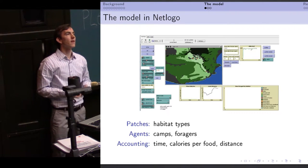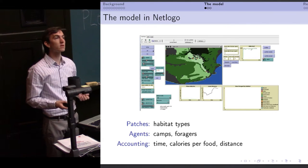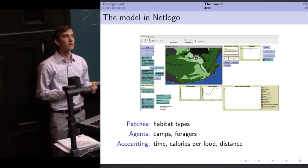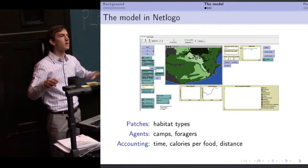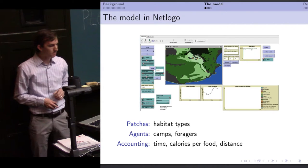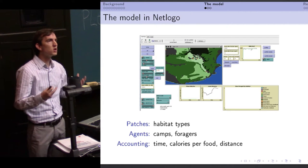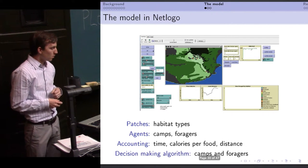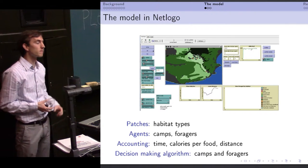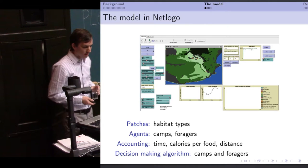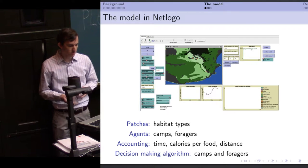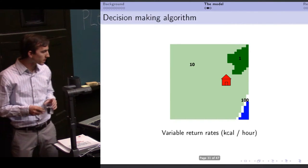The majority of the model is what I like to call the accounting. They are accounting for time. They're accounting for calories. How many calories does the group get, does each forager get, how much have they extracted from the landscape, all of that sort of number crunching part that is not actually so interesting from an archaeological sort of human behavioral way. What I want to focus on today is my decision-making algorithm that I've been working on, slight variations of this algorithm used by camps and foragers just based on the different timescales they're dealing with.